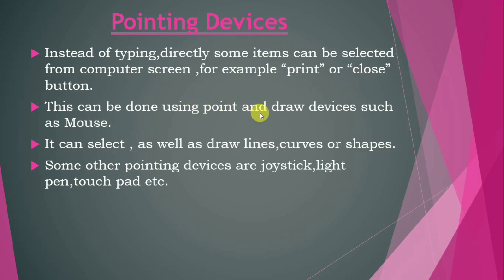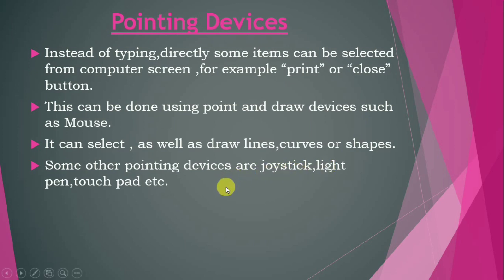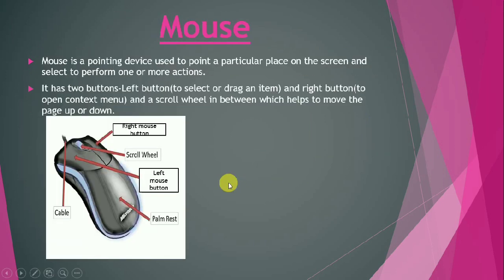This can be done using point and draw devices such as a mouse. As you know, a mouse is a device which helps us to point to any icon, and it also helps us to draw some lines, curves, or shapes. Some other pointing devices are joystick, light pen, and touchpad.